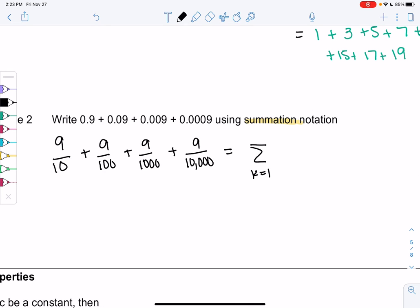I notice there's 1, 2, 3, 4 terms. So we're going to stop at 4. And then we're going to try to write this as a formula. So it looks like I have 9 over 10 plus 9 over 10 squared plus 9 over 10 cubed plus 9 over 10 to the fourth. So I think my series would be 9 over 10 to the k power. So this would be 1, 2, 3, 4. And that would be summation notation.